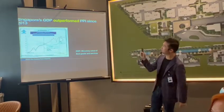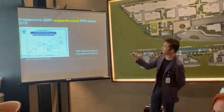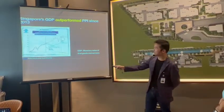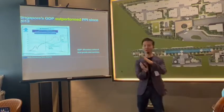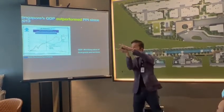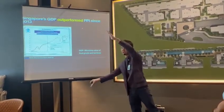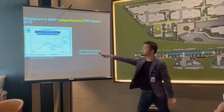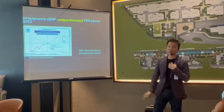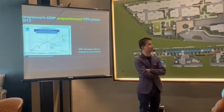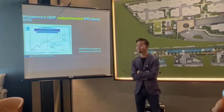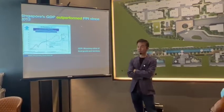For example, GDP outperforms the PPI. See, initially they all move in tandem, but when the TDSR comes in, they all move differently. Do you see that? Now, why is the GDP — anyone talking about GDP, Gross Domestic Product?